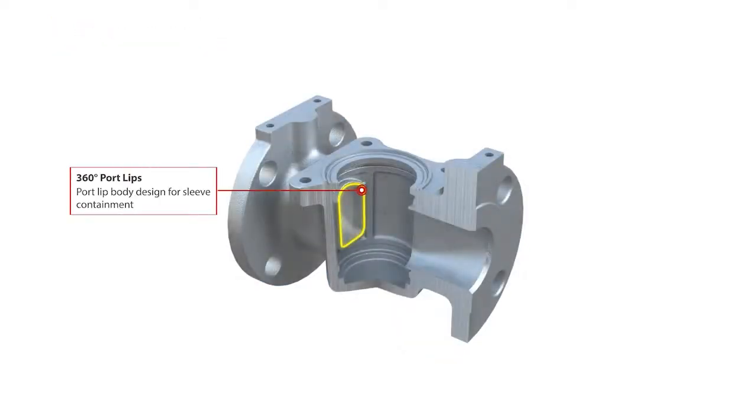The body casting has 360 degree lips around the ports. These keep the sleeve in place preventing sleeve rotation while the valve is being operated.